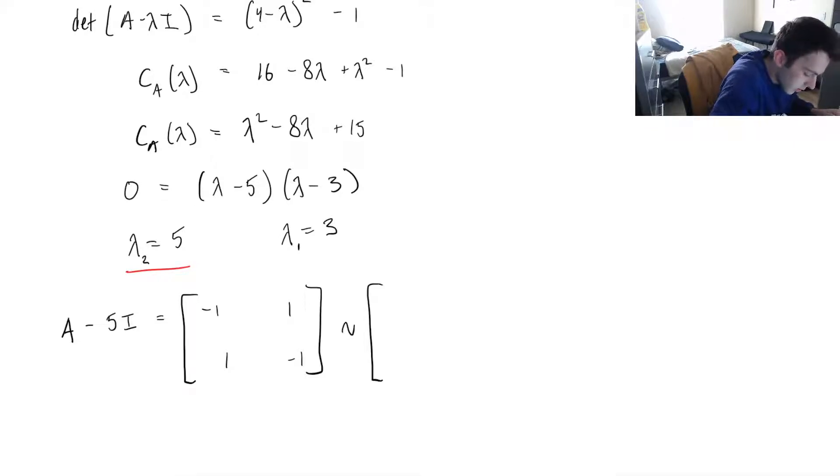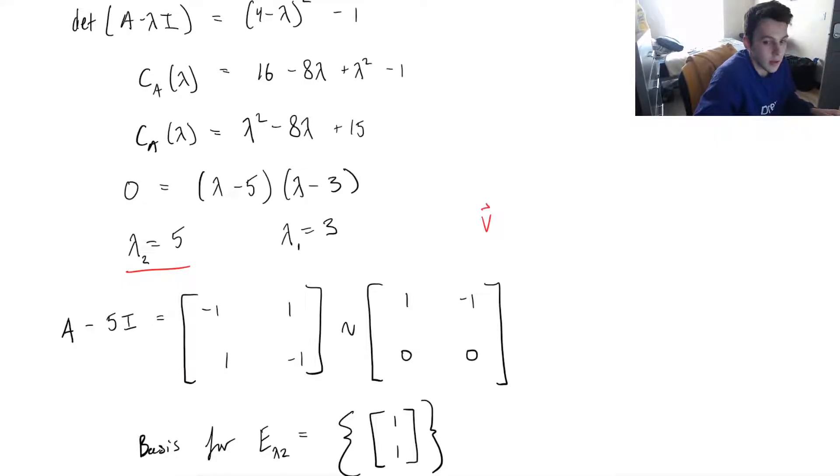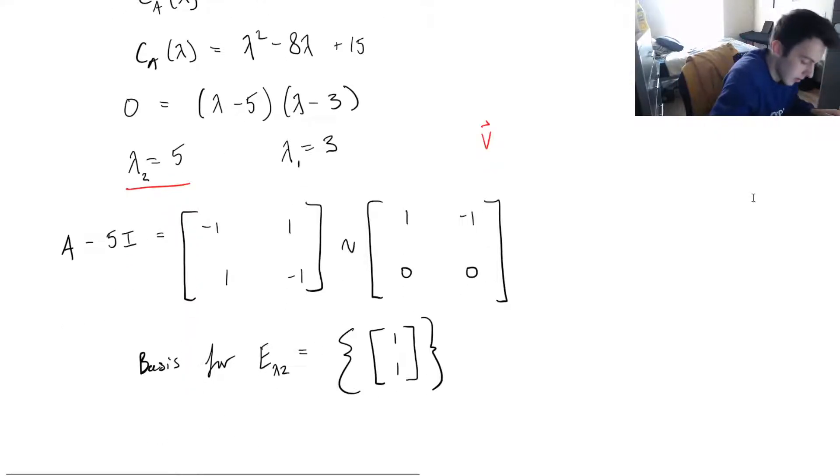And all the solutions to this are the solutions which satisfy A times some vector equals lambda times that vector. So we're solving for our vector v. Let's row reduce this thing. If we row reduce this, we're going to get 1, negative 1, and then a row of zeros. So the basis for my eigenspace that corresponds to lambda 2 is going to equal the span of this vector, 1, 1.